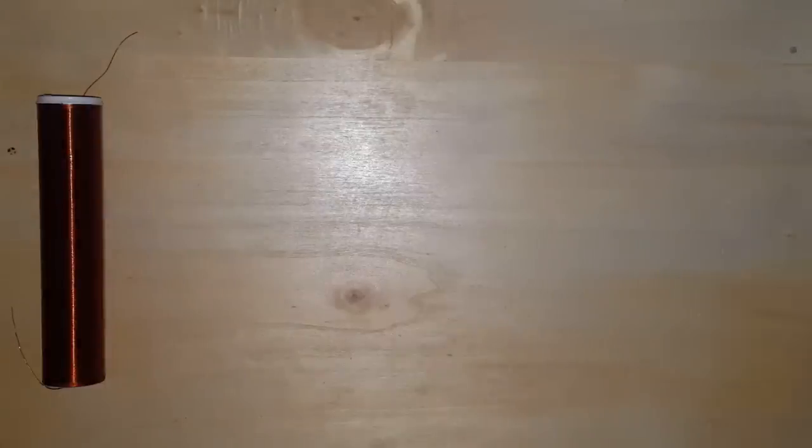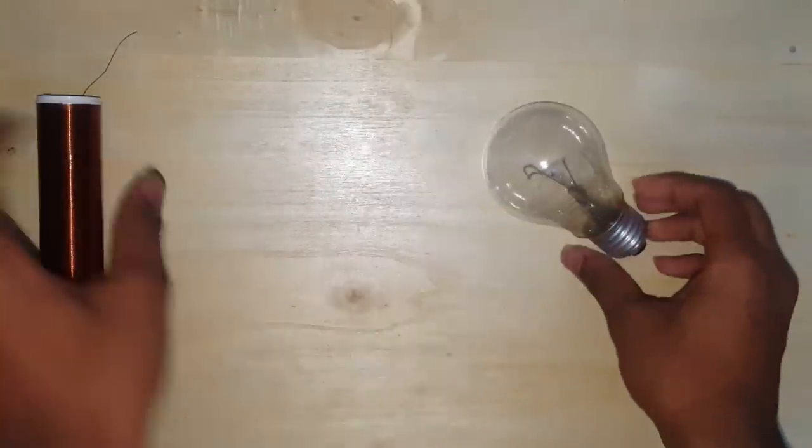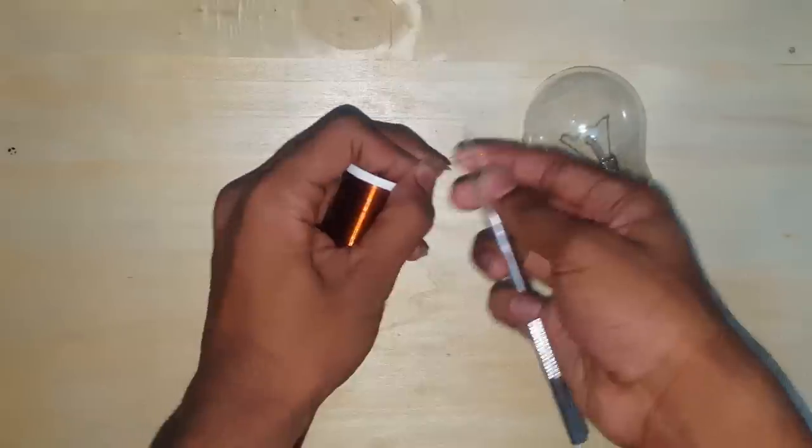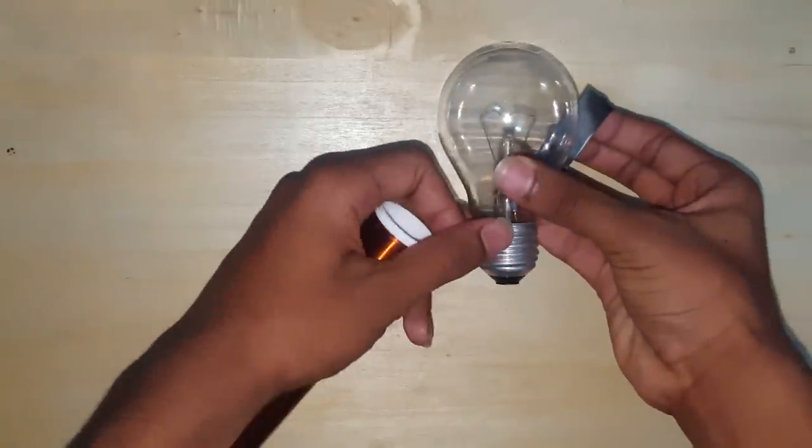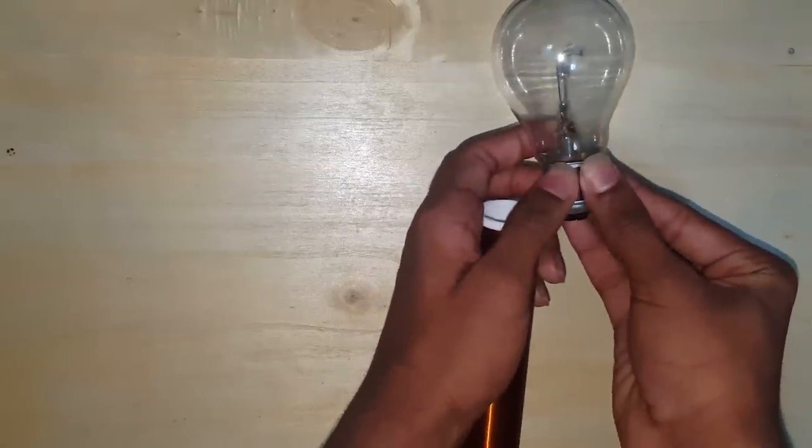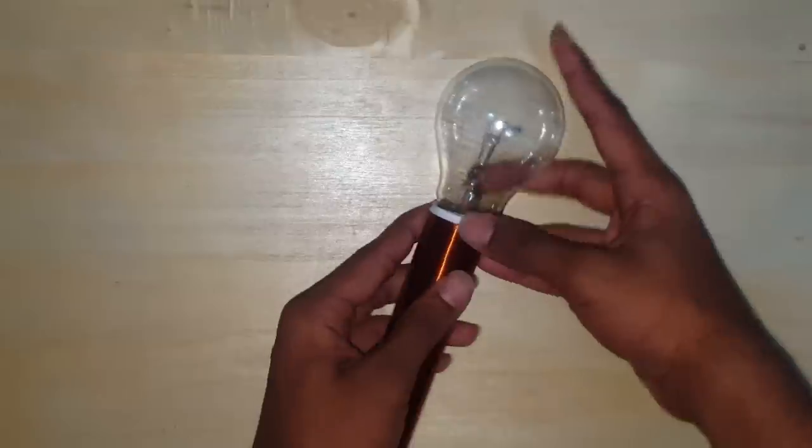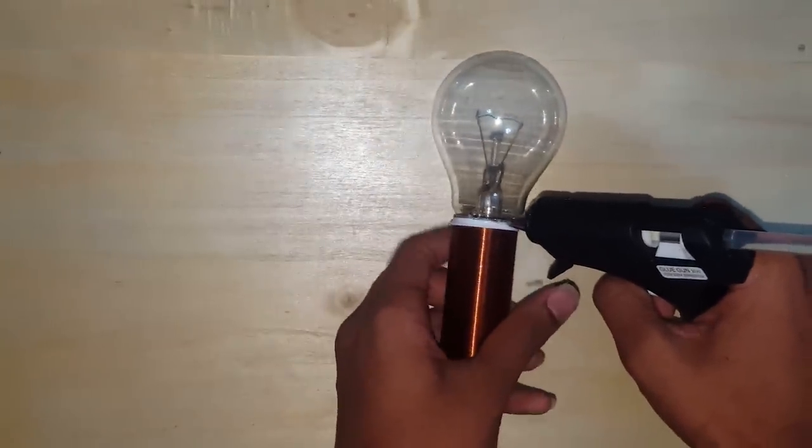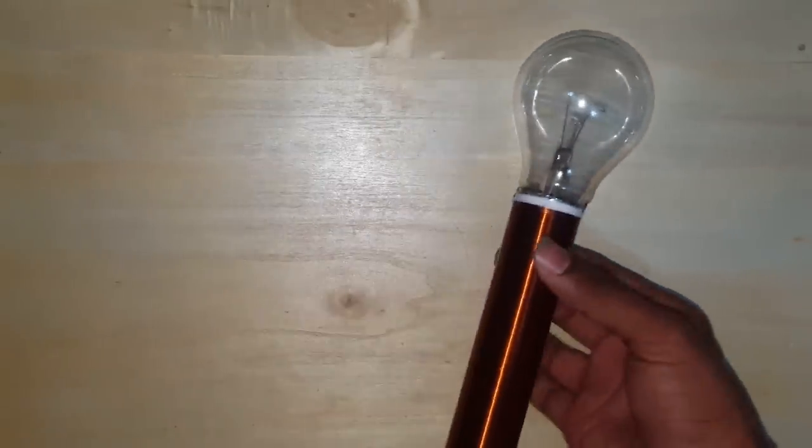To make the plasma globe, you're gonna need an incandescent bulb. This is just a regular household bulb; if you have a bigger bulb it is better. Now take the enameled wire and scrape off the insulation, and then you're gonna tape it to the bulb. Then slide the bulb inside the tube and to secure it, hot glue it. So now we have made our secondary coil as well as the top load. Now safely keep it aside.